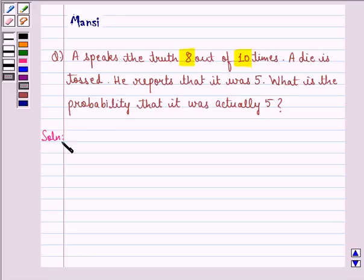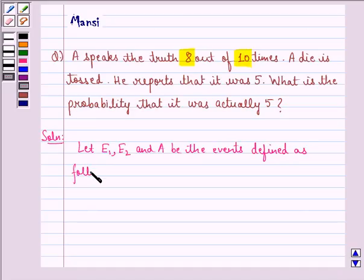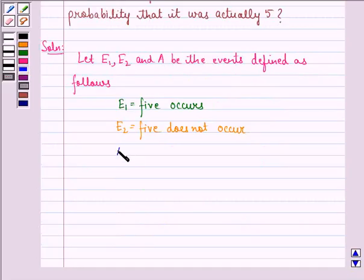Let us see the solution to this question. First of all, let E1, E2, and A be the events defined as follows. Let E1 be the event that 5 occurs and let E2 be the event that 5 does not occur. Let A be the event that man reports that it is 5.